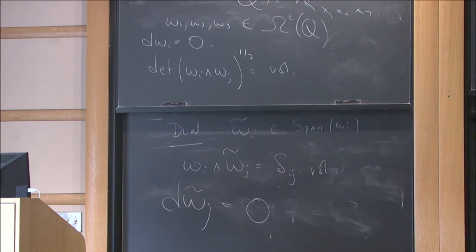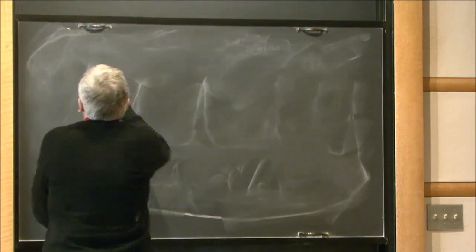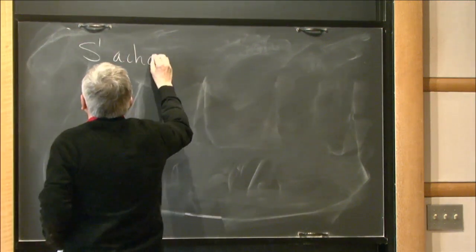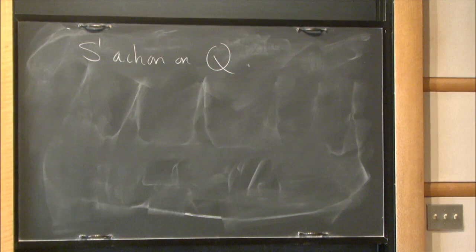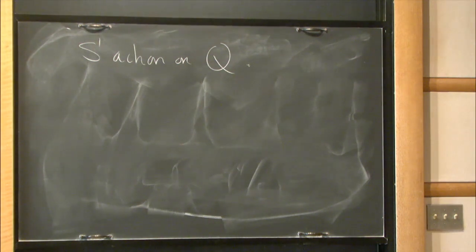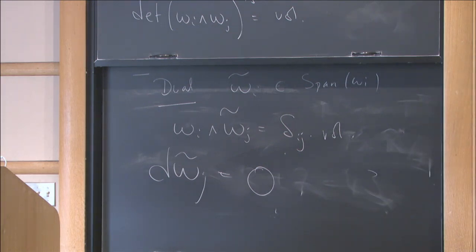We have to find a triple of closed two-forms such that applying this complicated nonlinear operation to get the dual triple also yields closed forms. That problem still looks difficult. Let's make things simpler by supposing an additional S¹ action on Q, with everything invariant under that action. We can then generalize what is known as the Gibbons-Hawking construction. The hyperkähler case is just when ωᵢ = ω̃ᵢ.